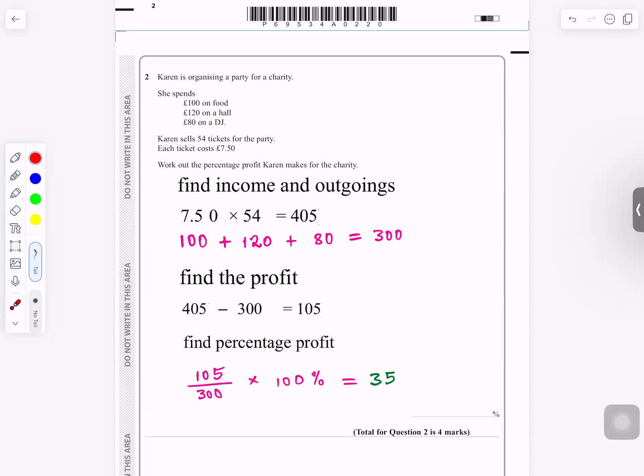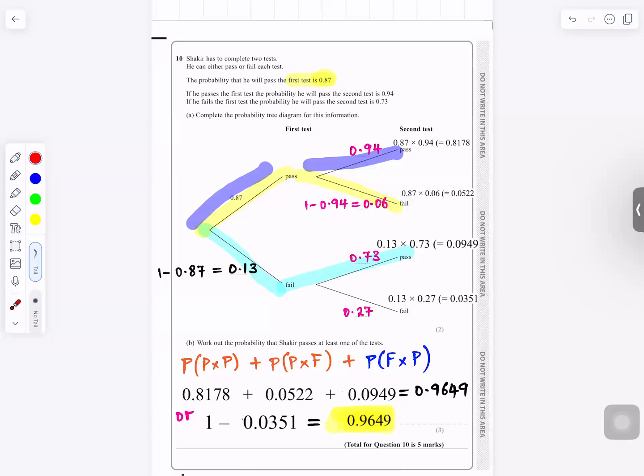Question number two: Karen is organizing a party for a charity. She spends 100 on, 400 pounds, 120 on hall, 80 pounds on DJ. So you work out those, you get 35. That's the answer for number one.